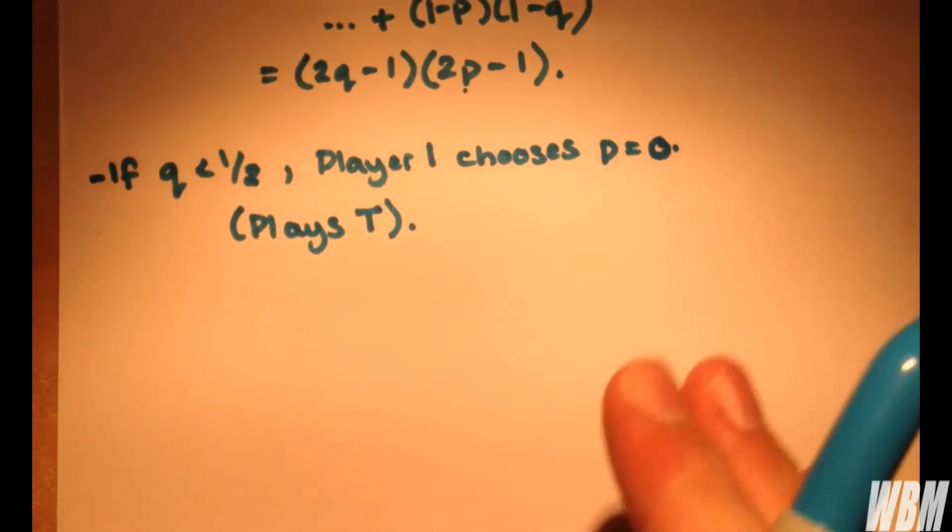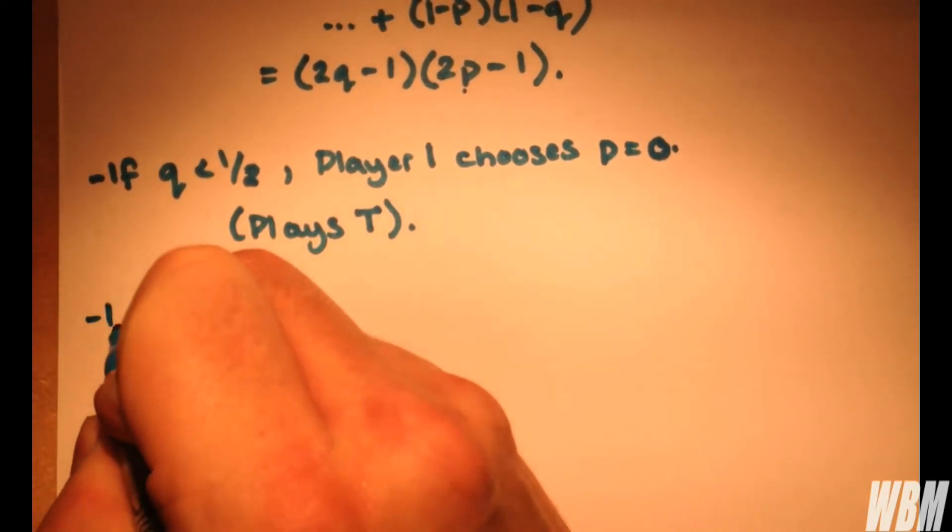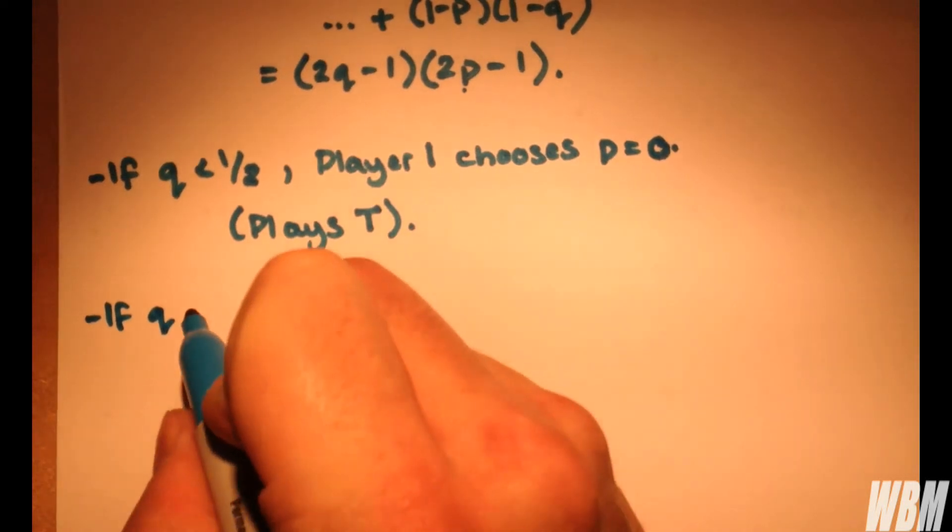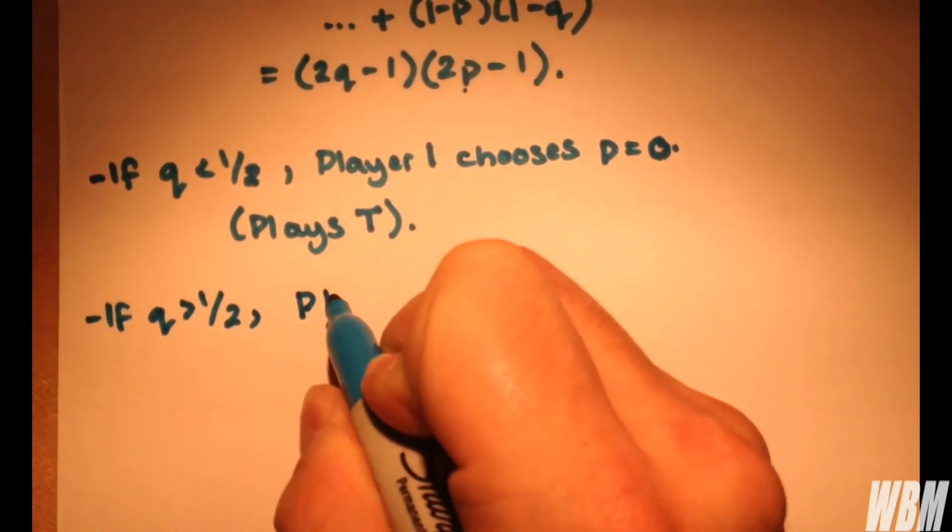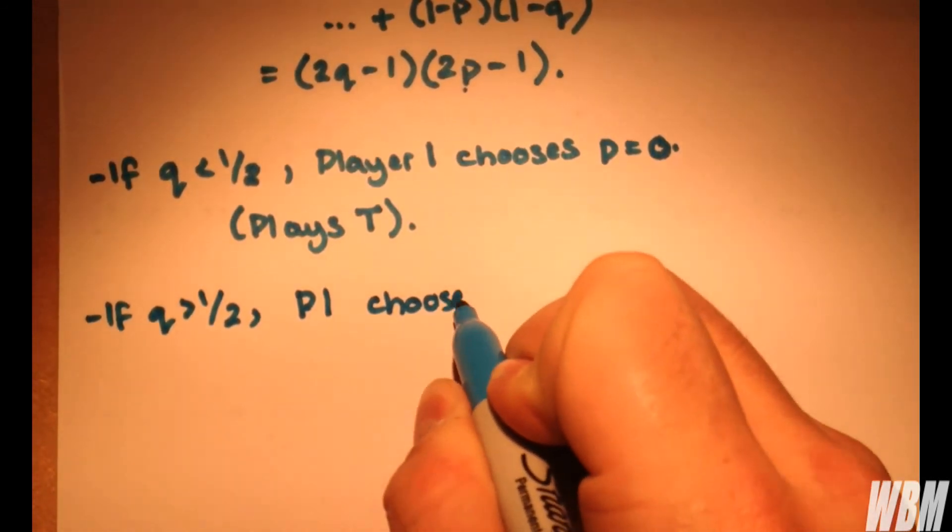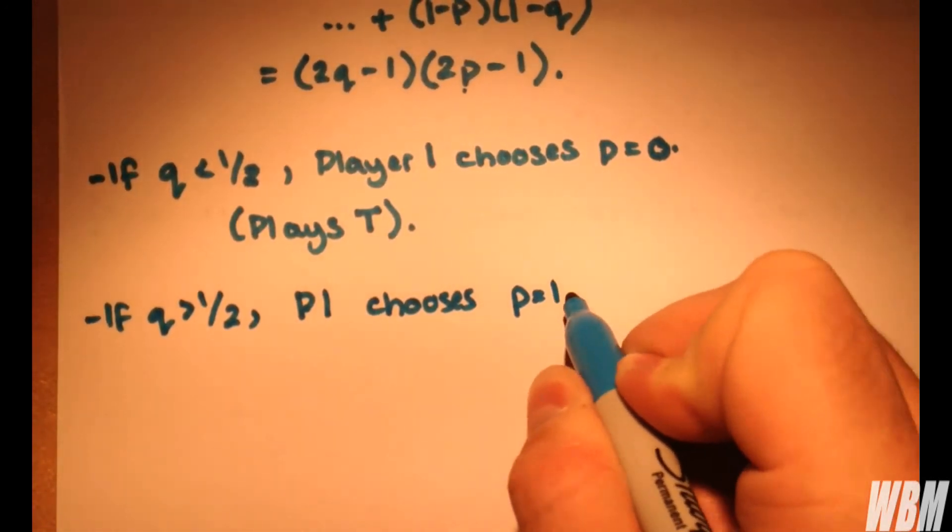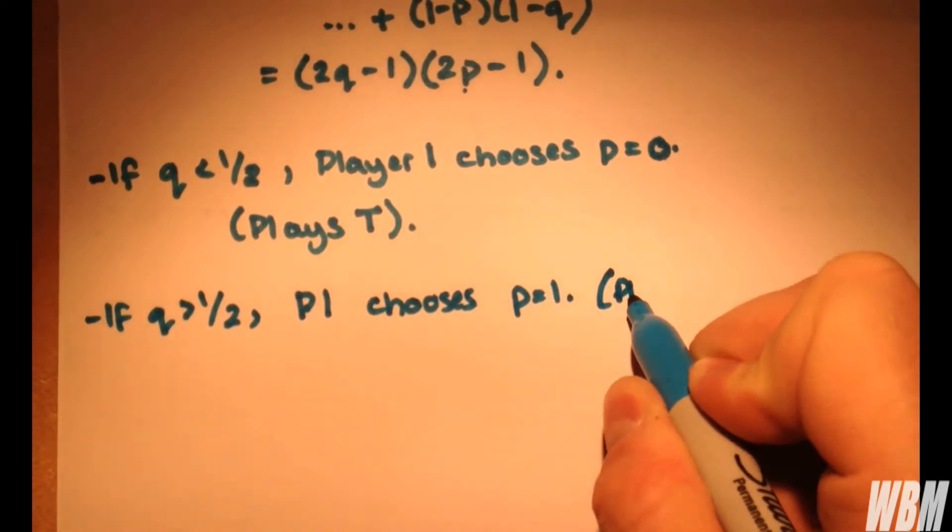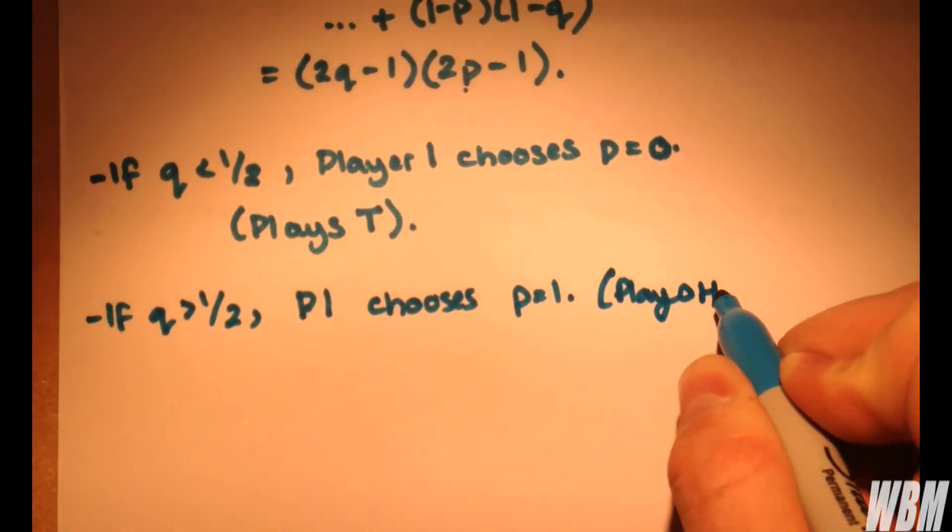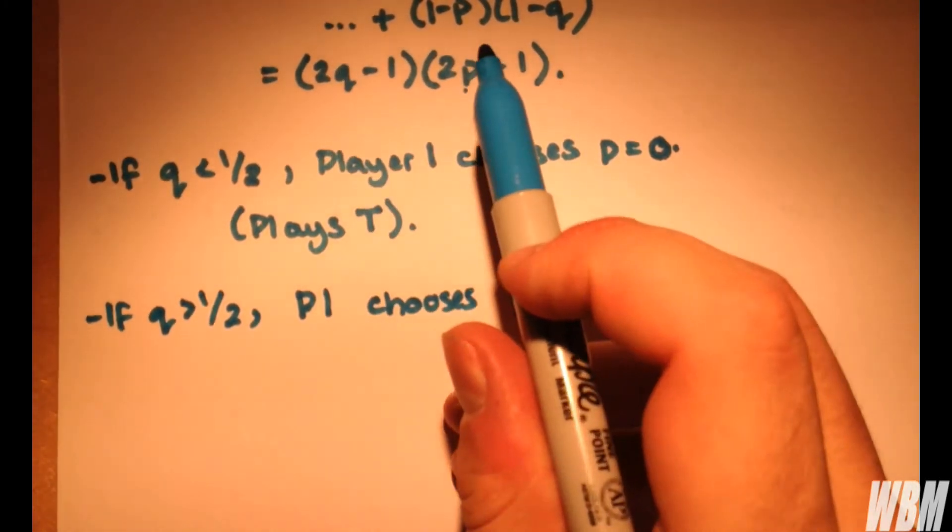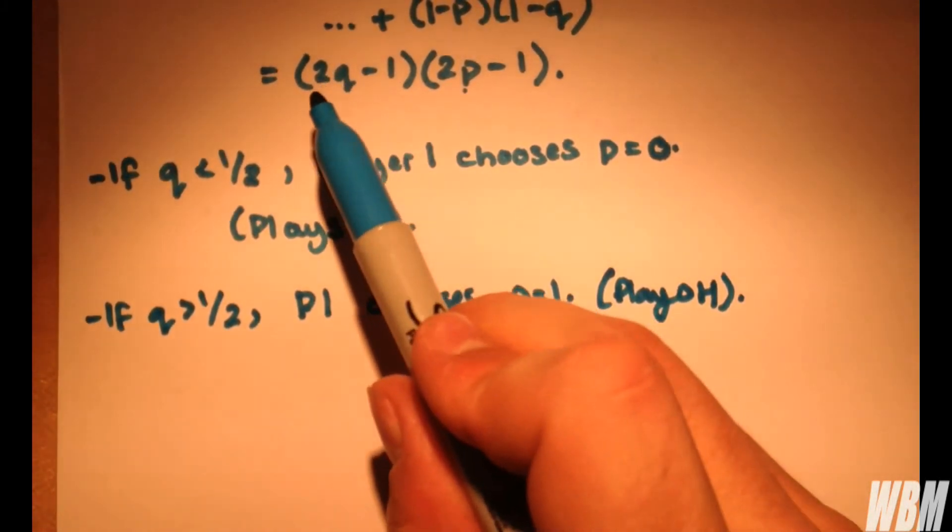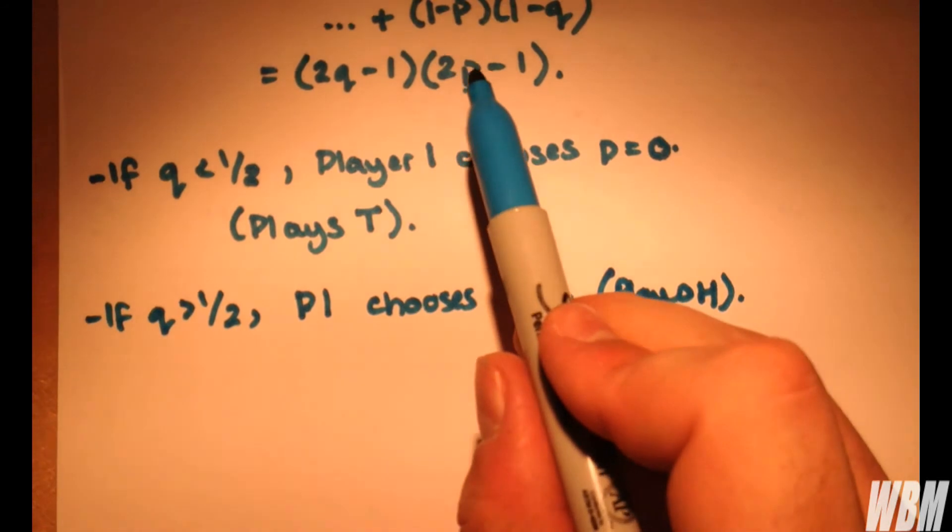However, if q is greater than a half, player one chooses p equals one and plays heads. As above we want a positive value here, so if we have greater than a half we also want a positive value here.